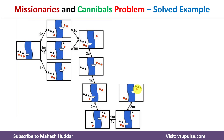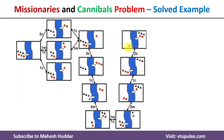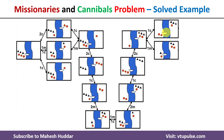Bringing one missionary back to the left is not suitable because two cannibals would eat that missionary. Bringing one missionary and one cannibal back would violate the constraint with three cannibals and one missionary. So the only valid move is to bring one cannibal to the left hand side. We then bring two cannibals to the right hand side. From that state, we can bring one cannibal or one missionary back to the left; bringing one missionary and one cannibal would violate the constraint leaving one missionary and two cannibals. We choose to bring one missionary back to the left.